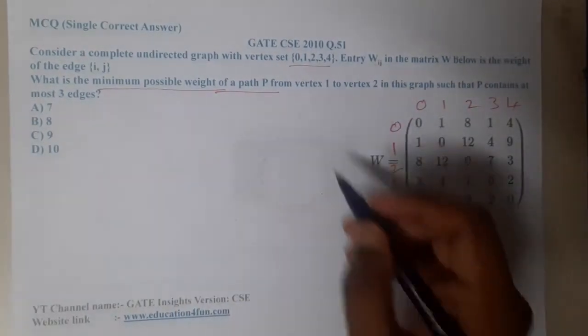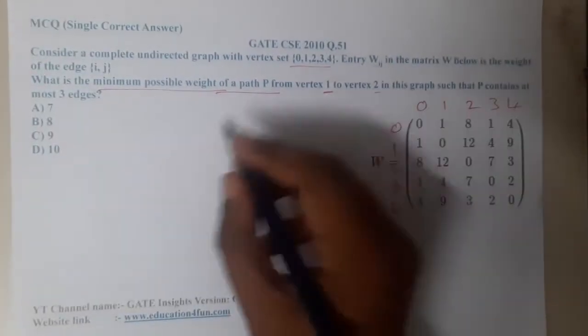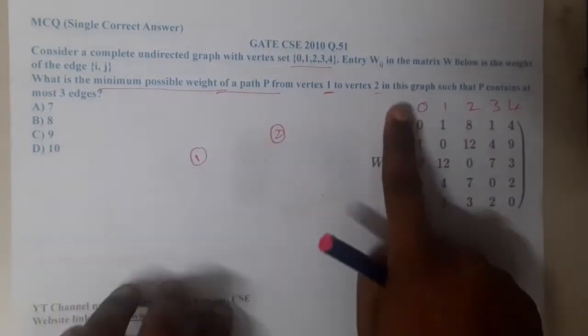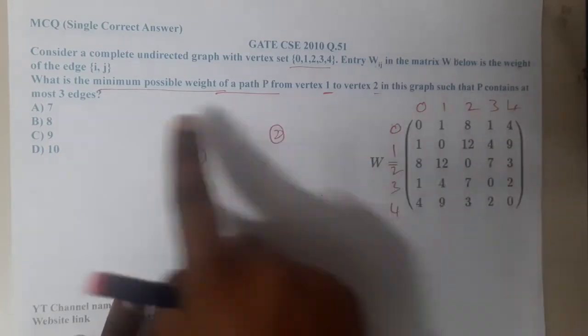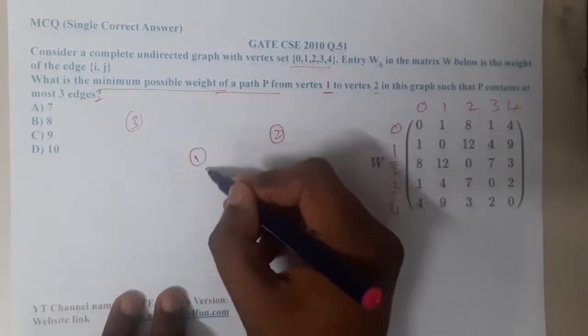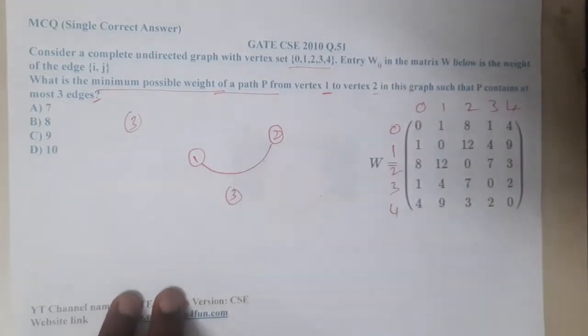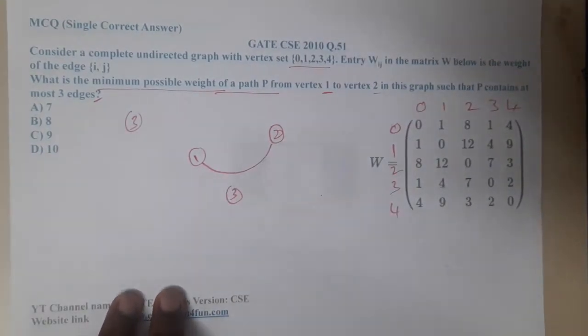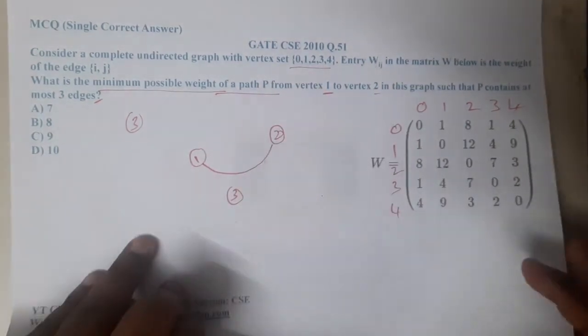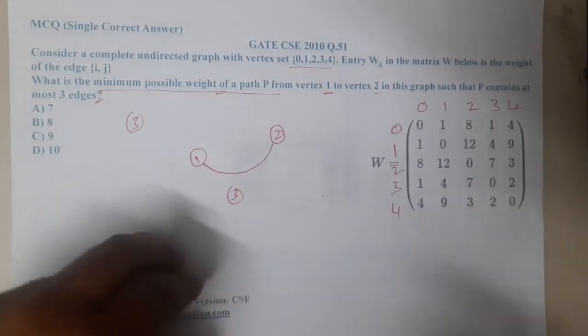We are trying to travel from 1 to 2 in this graph such that the path contains at most 3 edges. At max you can have between 1 and 2 at most 3 edges. What is the minimum cost? If you recall, we have already drawn the minimum spanning tree for this. I'll be just showing you that image, guys.